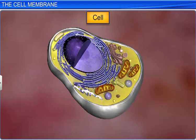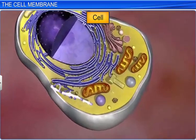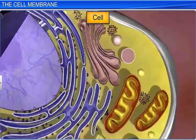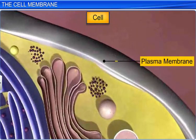The cell, the basic unit of life in all organisms, has several organelles embedded in its cytoplasm. These organelles are surrounded by a thin membrane called the plasma membrane, which not only separates the extracellular environment from the cytoplasm, but also gives shape to the cell.